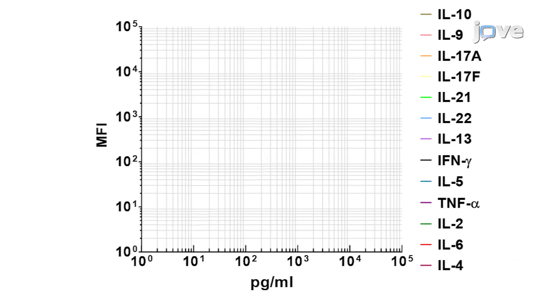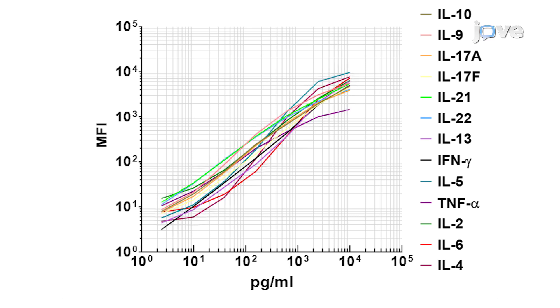Representative standard curves for target analytes were generated using the mouse T helper cytokine panel. Properly run assays will demonstrate curves with broad dynamic ranges as shown here. Standard curves must be run each time the assay is performed.